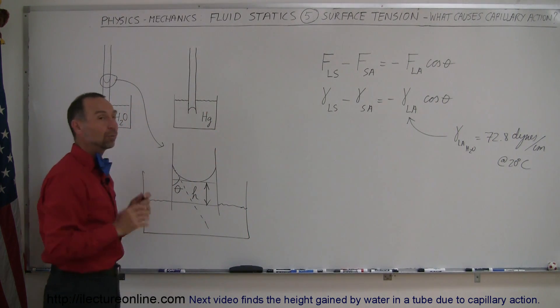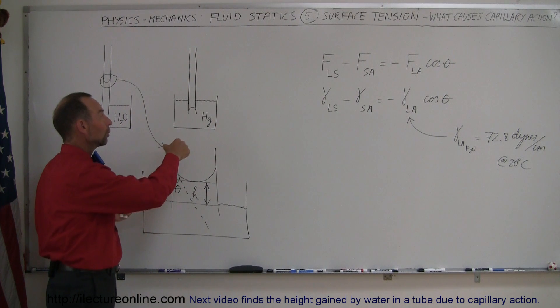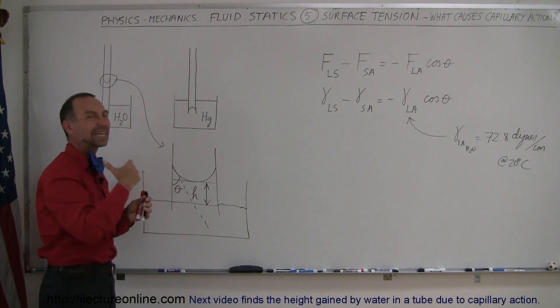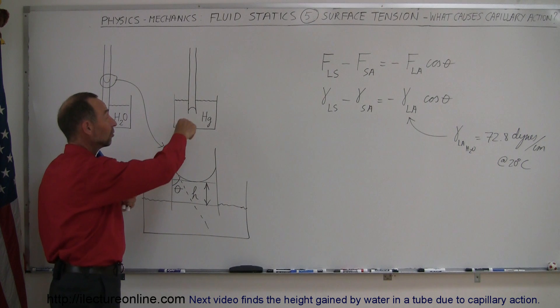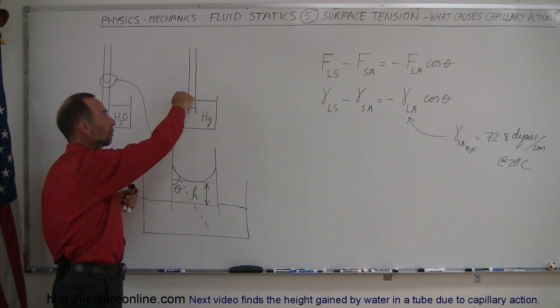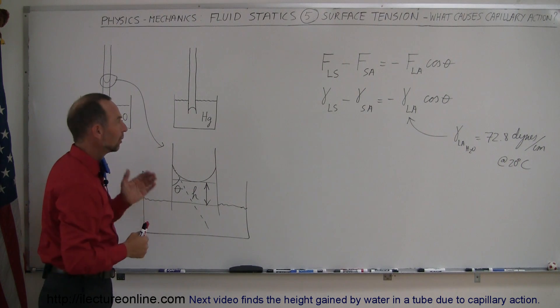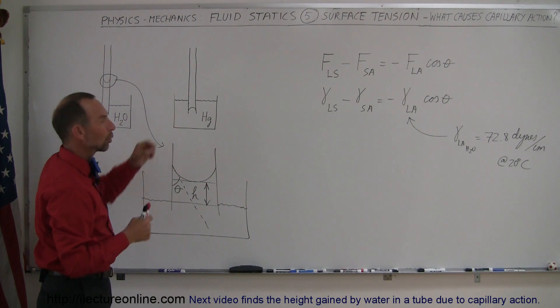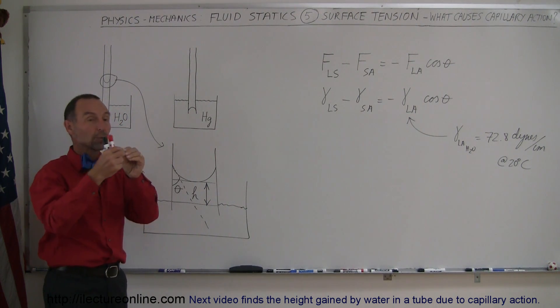Now, in this particular case, what we find is we use mercury and we stick a small little, what we call capillary tube, inside the mercury. What will happen then is the mercury inside the tube will actually be pushed down below the level of the mercury in the rest of the cup.